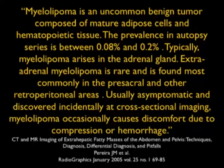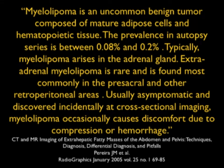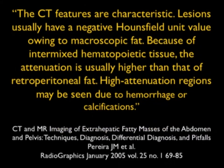Myelolipomas can grow over time, stay the same, or even get smaller. They can have mass effect, and theoretically can have hemorrhage, though it's exceedingly rare. We talk about lesions above 5 cm, and urologists often talk about removing those because of the possibility of bleeding. There's a good article by Parara. Myelolipomas are an uncommon benign tumor — prevalence in autopsy series is under 0.2%. They arise in the adrenal gland and occasionally can be extra-adrenal. The challenge with myelolipomas is they bleed.